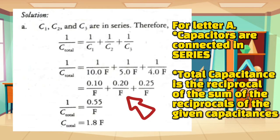That now gives us 0.10, 0.20, and 0.25 respectively, all over the unit of farads. From that point, we add the values. Thus, we now get 0.55 over farads. And then, from that point, we need to get the reciprocal of 0.55 over farads. That will now give us 1 over 0.55. 1 divided by 0.55 is equal to 1.8 farads. That is now the total capacitance of the capacitors in diagram letter A.